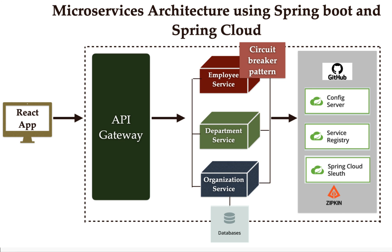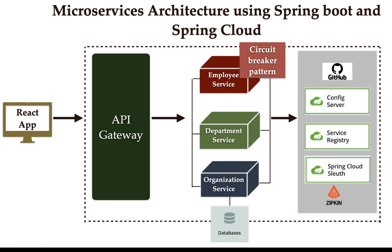The circuit breaker pattern helps employee service avoid continuous calls to department service whenever it is down, and instead return a default response back to the API gateway, which then sends that default response to the client. This is the microservices architecture we are going to follow to create a microservices project using Spring Boot and Spring Cloud. I'll see you in the next lecture.